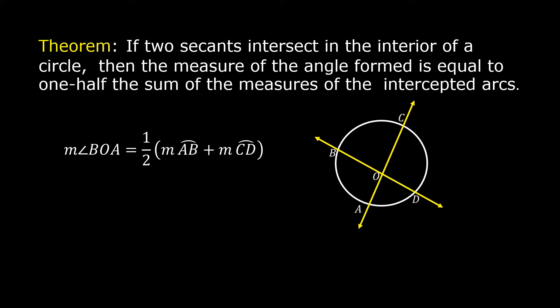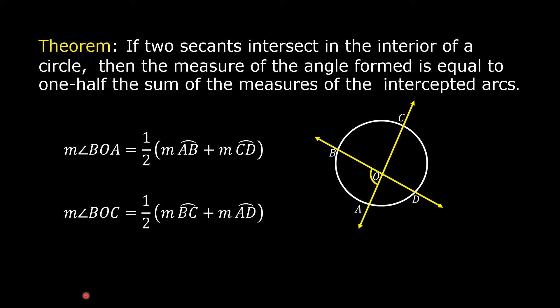The measure of angle BOA is equal to one-half times the quantity: measure of arc AB plus measure of arc CD. The measure of angle BOC is equal to one-half times the quantity: measure of arc BC plus measure of arc AD.